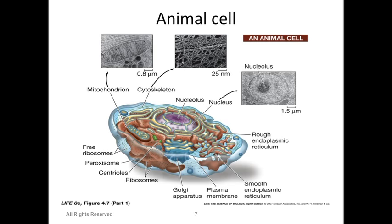Another view for animal cells — so in animal cells you can see these are some important structures which we will see. What we have missed so far is actually the cytoskeleton. These are actually polymer filaments, all tangled together, and they actually give mechanical strength to any cell.